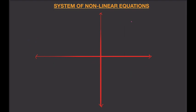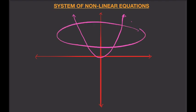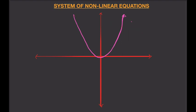I could also have a parabola and an ellipse. In this case, I have four solutions. Or maybe just a parabola and a straight line. So I have two solutions — that point and that point. This is what solving a system of nonlinear equations looks like graphically.